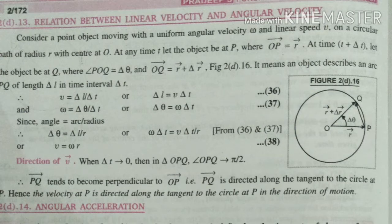At any time t, the object is at point P. Let OP equal r. After some time t plus delta t, the object moves to Q. The angle becomes delta theta. This is vector r, then O to Q is also r.